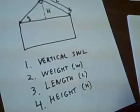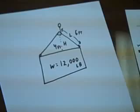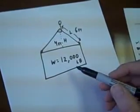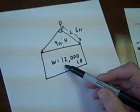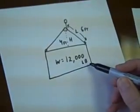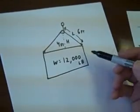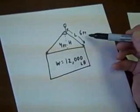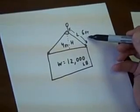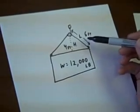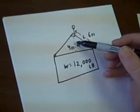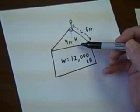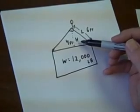So we'll put some real numbers onto this. Let's suppose that the load has a total weight of 12,000 pounds. We have two six foot straps, L, and the distance the hook is above the load is four feet, which is H.